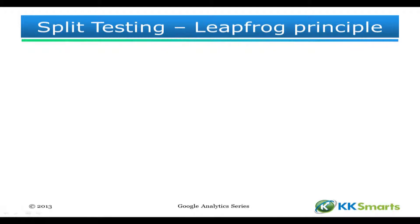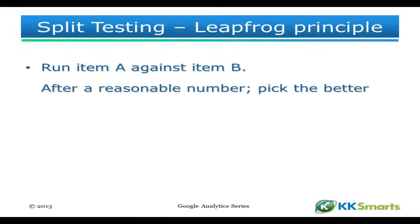One of the basic mechanisms is something called split testing, and it works a bit like a continuing game of leapfrog. You get one item, A, and you use that as the control — the scientific term — and you run item B against it, so you cause them to compete. Now, depending on your point of view, you either take a statistical view of what reasonable is, or you say it's enough that you feel comfortable — a good answer.